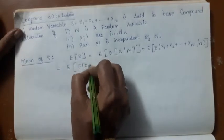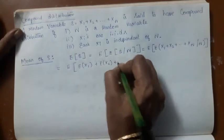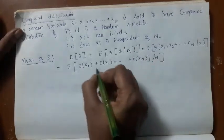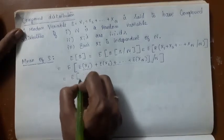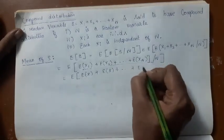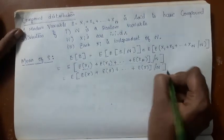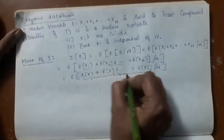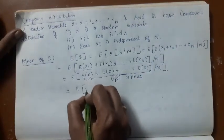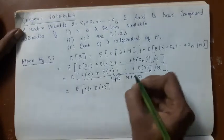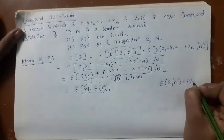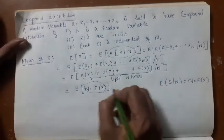This can be written as expectation of E[X1] + E[X2] + ... + E[XN] given N. Since the Xi's are all IIDs, all their expectations will be equal — let us say equal to E[X]. So you are adding E[X] up to N times, which gives N times E[X]. Therefore, E[S|N] = N · E[X].